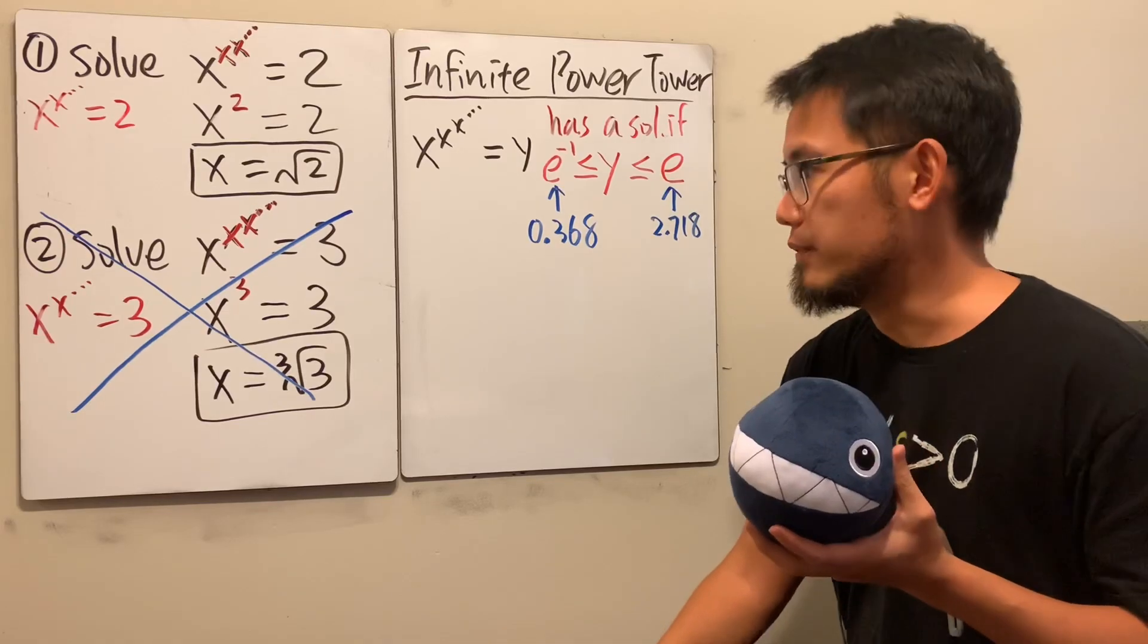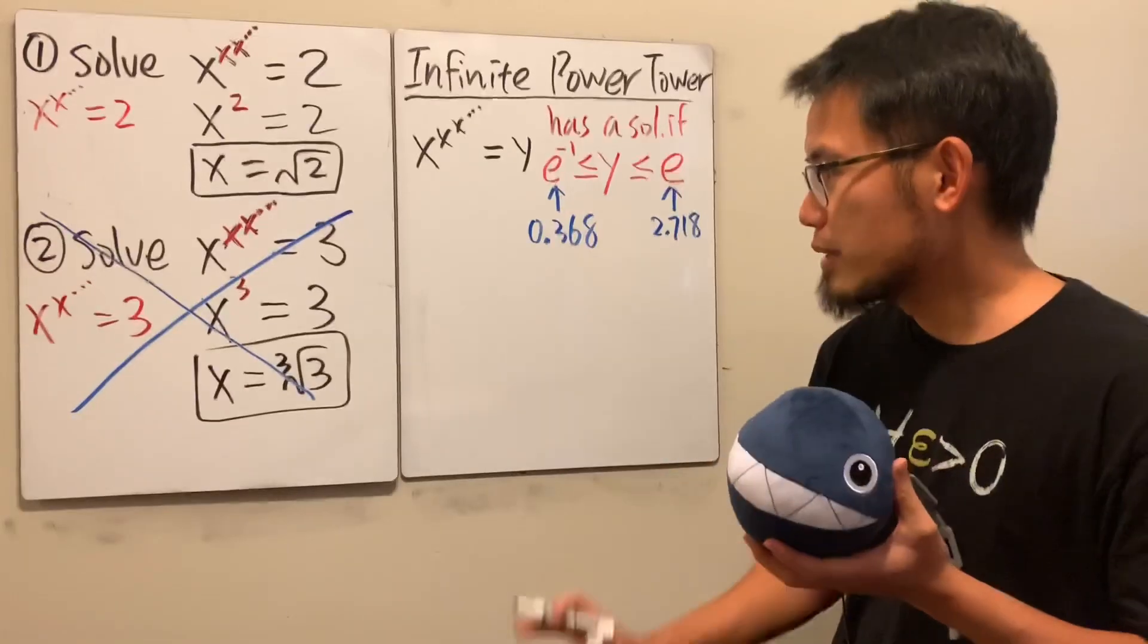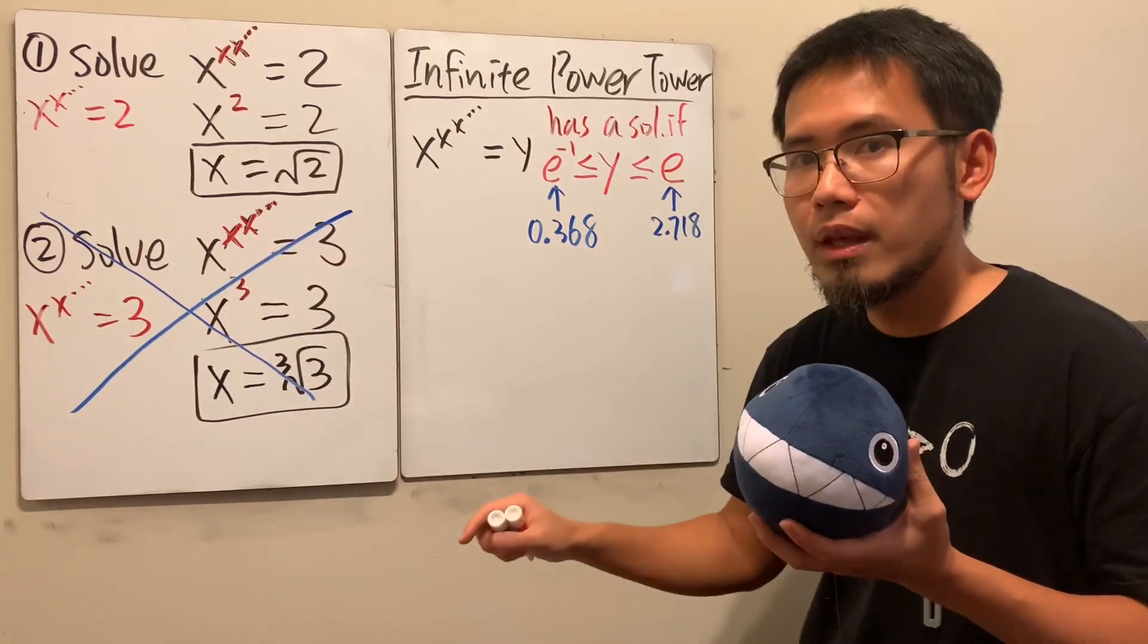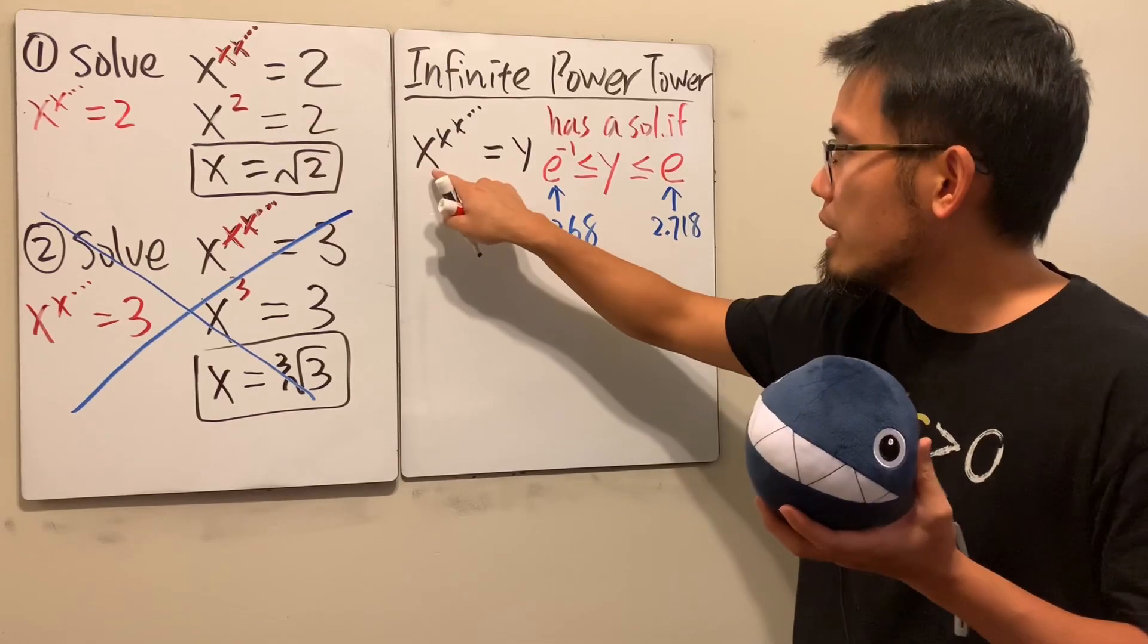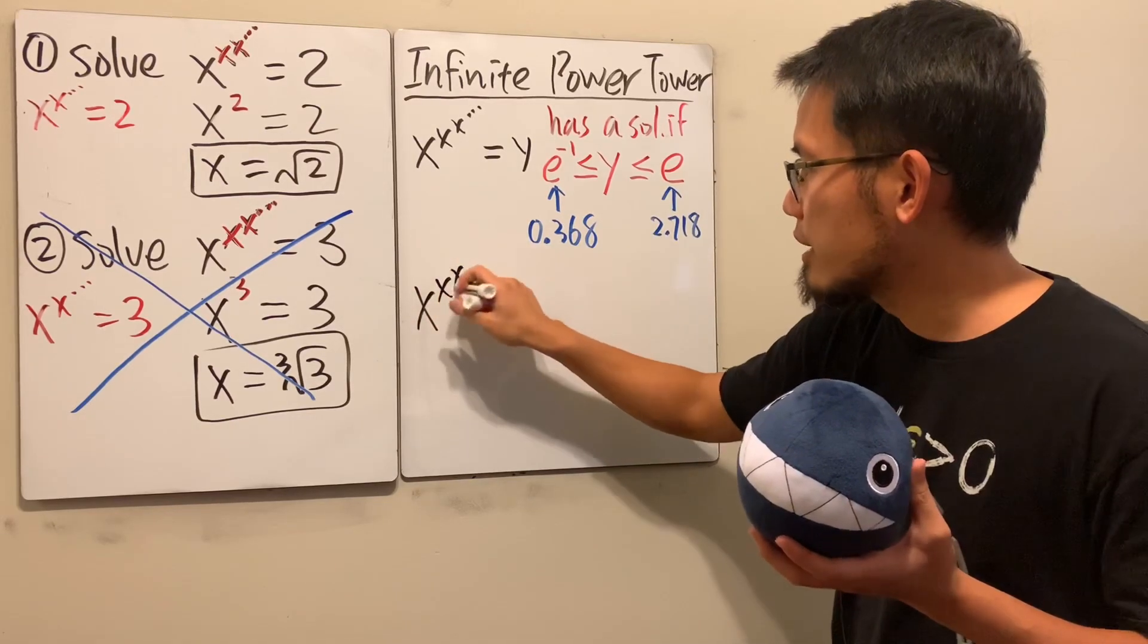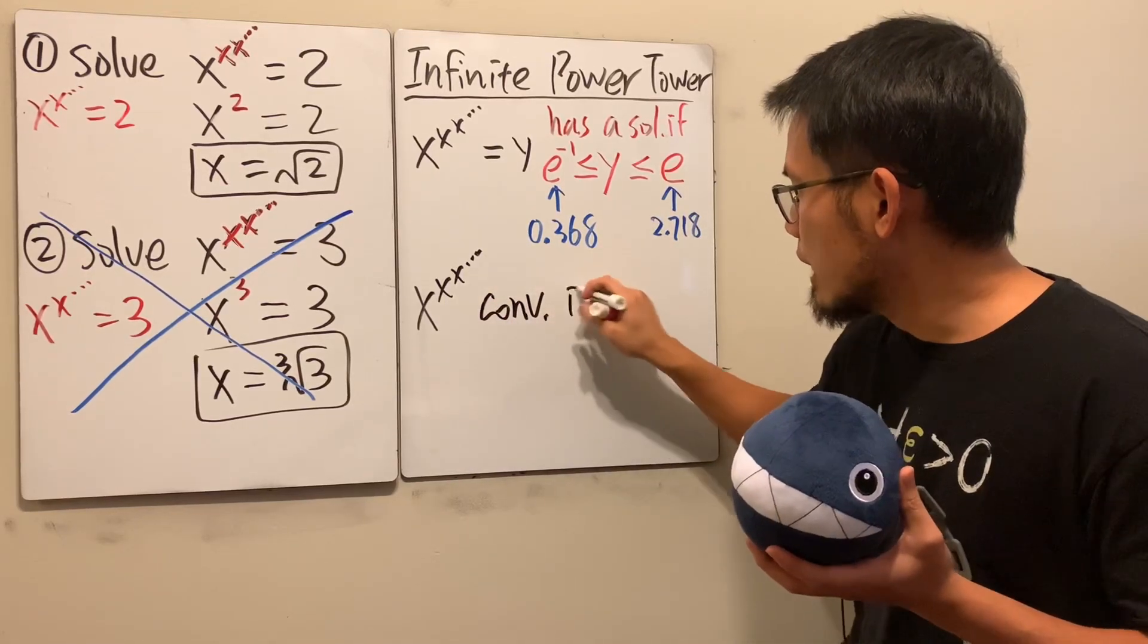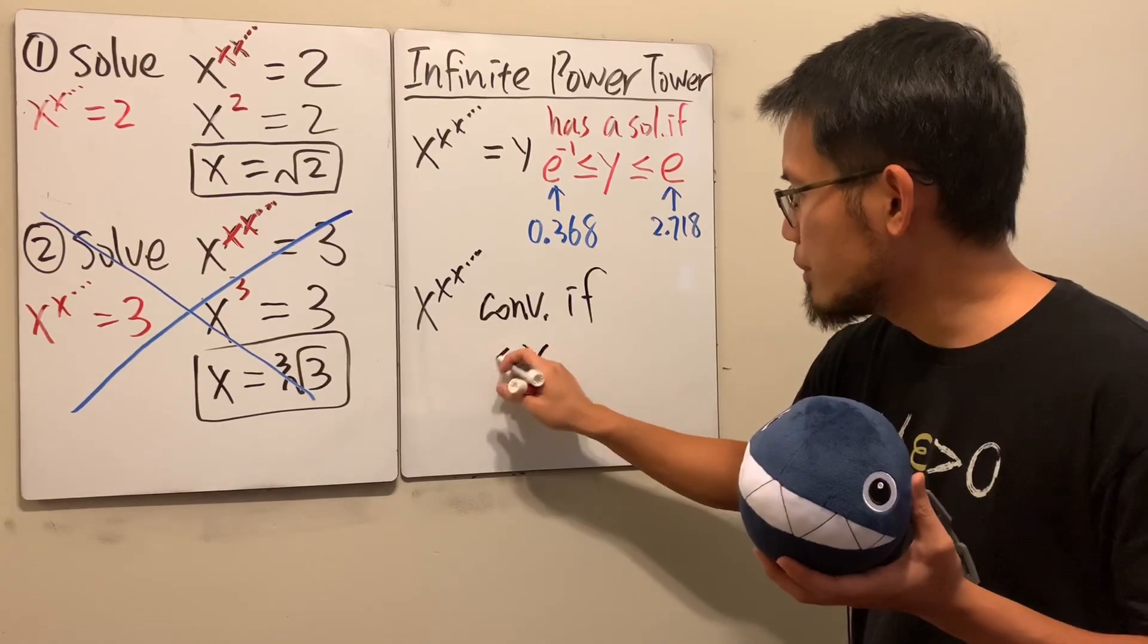Now have a look. Earlier we saw something kind of weird because when we plug in the cube root of 3 into the infinite power tower, the result actually converged. I wanted to tell you, if you have x to the x to the x dot dot forever, from a computational perspective, this converges if x is between two numbers. X is between e to the negative e and e to the 1 over e power.